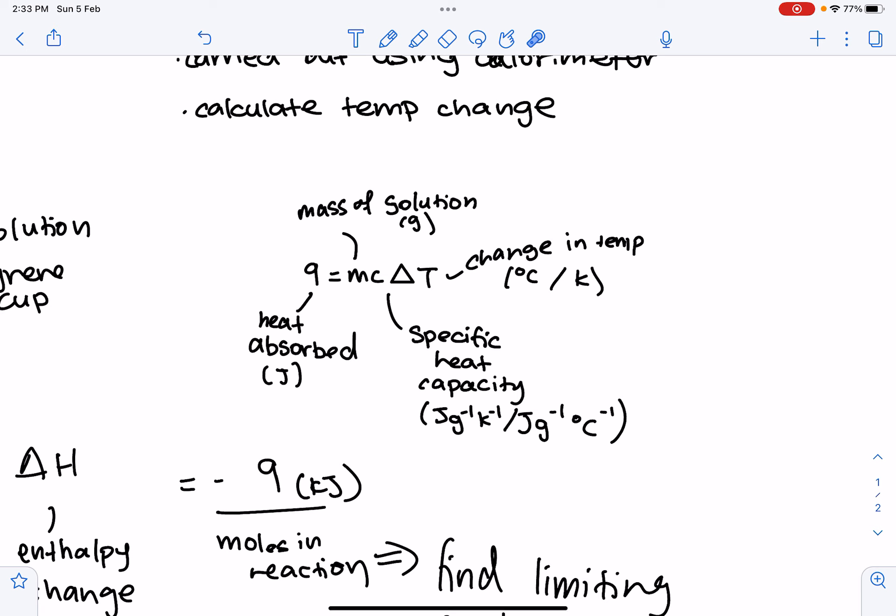So, what is specific heat capacity? It is the amount of heat required to raise the temperature of one gram of substance by one degree Celsius or one Kelvin. So, as you can see, the units are either joules per gram per Kelvin or joules per gram per Celsius degrees.